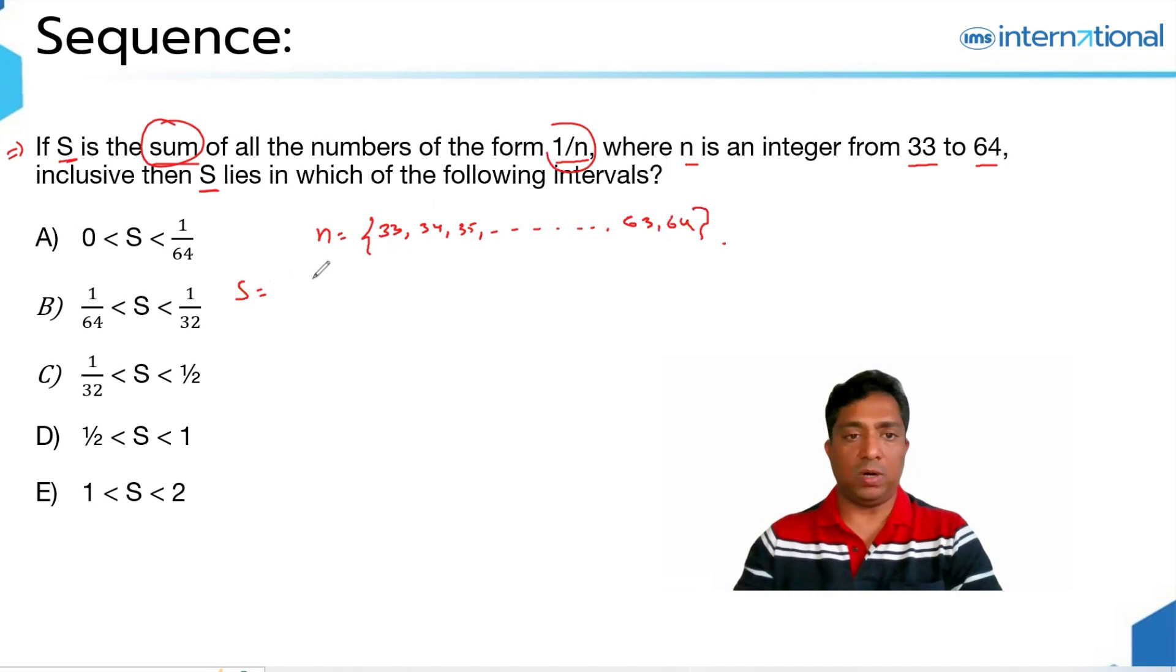And S is defined to be the sum of all the numbers in the reciprocal form from 33 to 64. That has to be 1/33, plus 1/34, plus 1/35, so on, 1/62, 1/63, plus 1/64. So, the summation of these values is defined to be S.